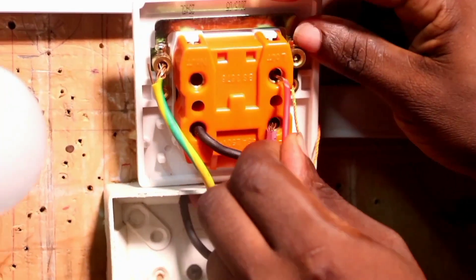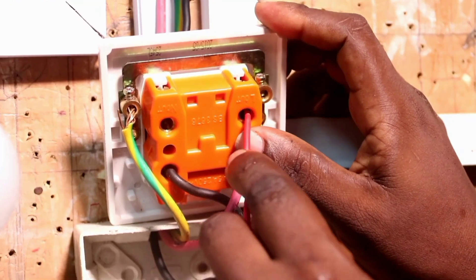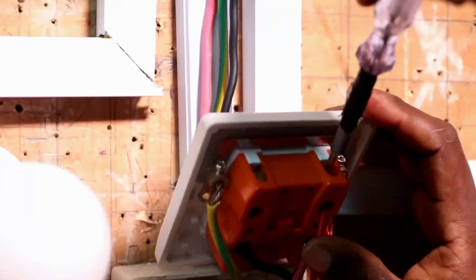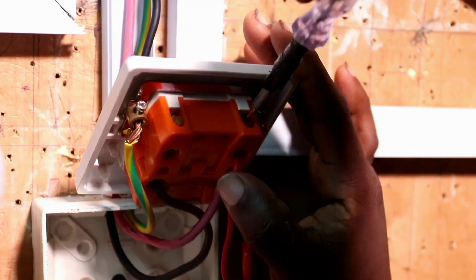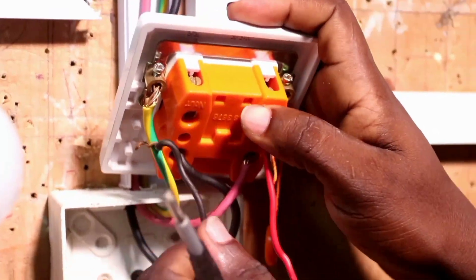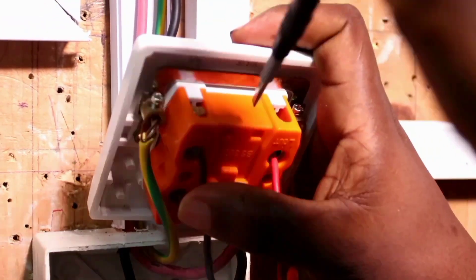This is where we connect our live out. This is where we connect our load. Live for the load, that is the heater, we connect it here. And this is where we connect our neutral for the heater load.